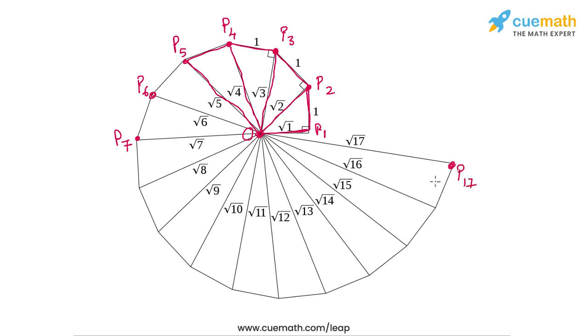At any step we can see that if the current length is root n, then the next length is root n plus 1. For example, this point represents P10. Since OP10 is root 10 units, then the next length OP11 will be root 11 units.